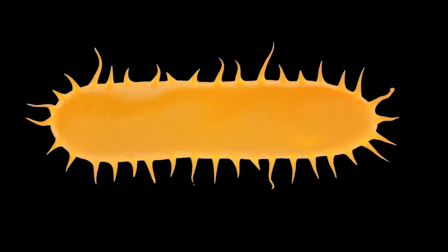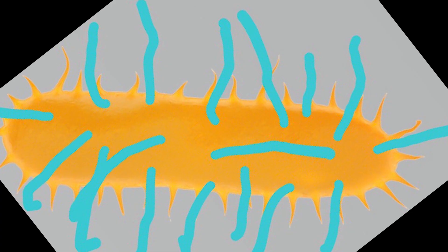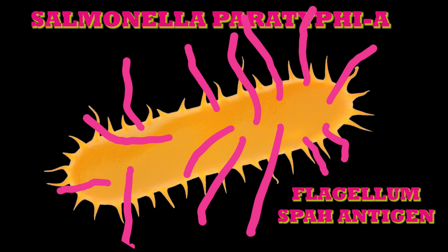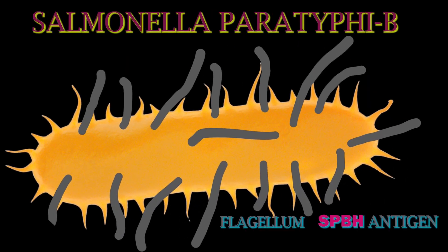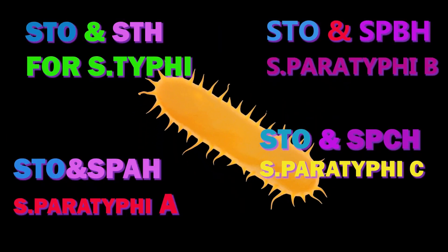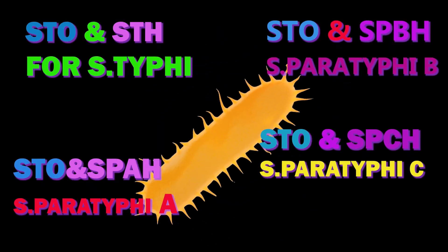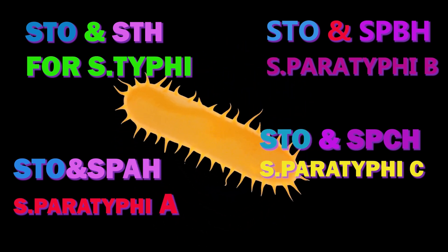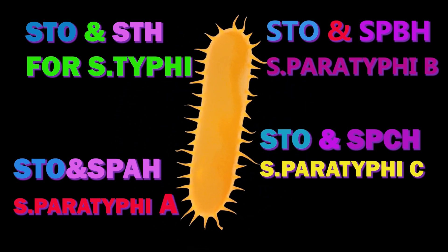Regarding antigen preparation: the antigens used in the test are the H and O antigens of S. typhi and the H antigens of Salmonella paratyphi A, B, and C. The paratyphoid O antigens are not used as they cross-react with the typhoid O antigens due to sharing of factor 12.